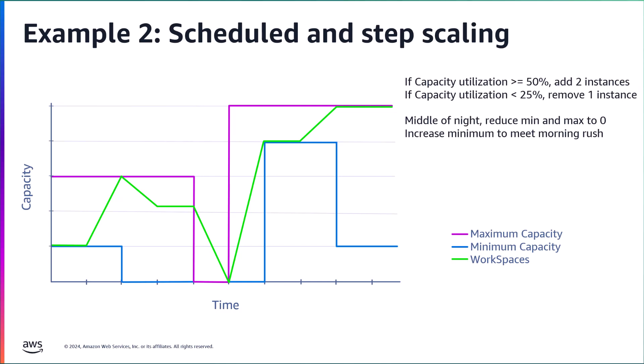The next example demonstrates how scheduled policies work in conjunction with step scaling. The same scaling policies are configured from the previous screen. Two instances are added when capacity utilization is at or equal to 50% and one instance is removed when capacity utilization falls below 25%. In addition, the scheduled policy reduces the min and max capacity value to zero during the night and then increases the minimum and maximum before the morning logon rush.